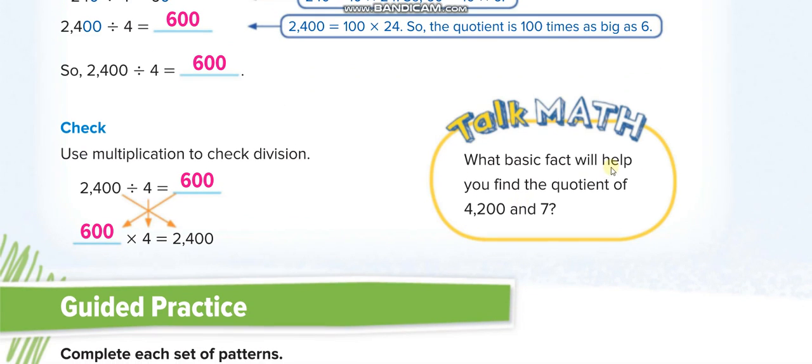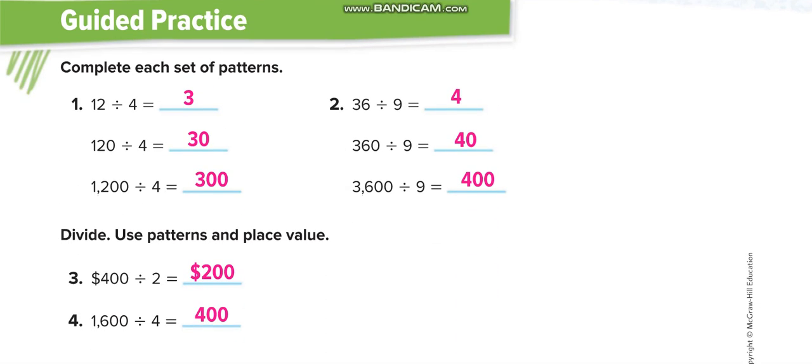What basic fact will help you find the quotient of 4200 divided by 7? So, you will think that 7 times what equals 42? 7 times 6 equals 42. That means you will put 2 zeros, so 600.